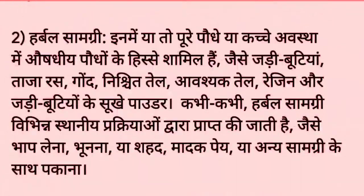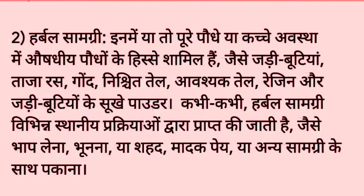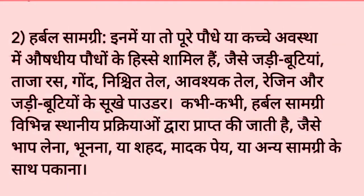2. हर्बल सामग्री: इनमें या तो पूरे पौधे या कच्ची अवस्था में औषधीय पौधों के हिस्से शामिल हैं, जैसे जड़ी बूटियां, ताजा रस, गोंद, निश्चित तेल, आवश्यक तेल, रेजिन और जड़ी बूटियों के सूखे पाउडर। कभी-कभी हर्बल सामग्री विभिन्न स्थानीय प्रक्रियाओं द्वारा प्राप्त की जाती है, जैसे भाप लेना, भूनना, या शहद, मादक पेय, या अन्य सामग्री के साथ पकाना।